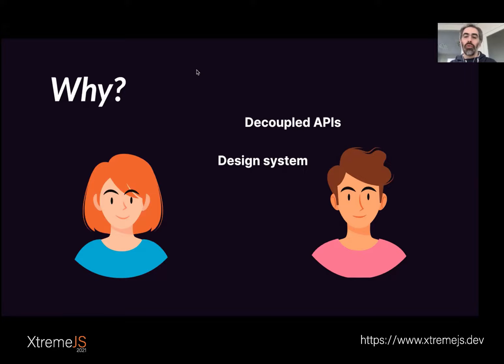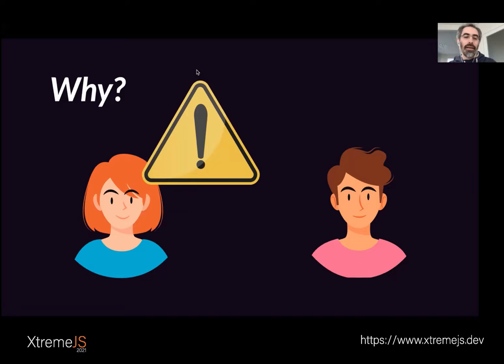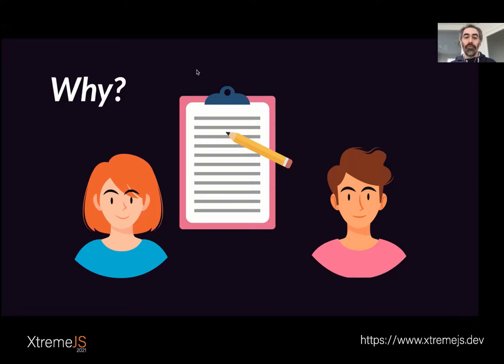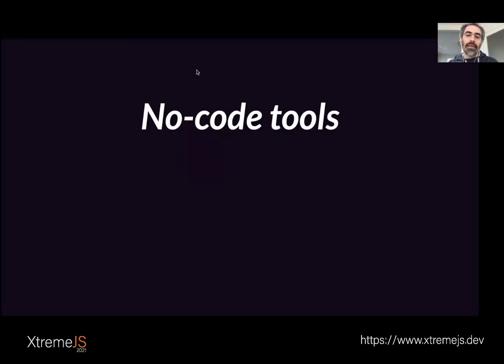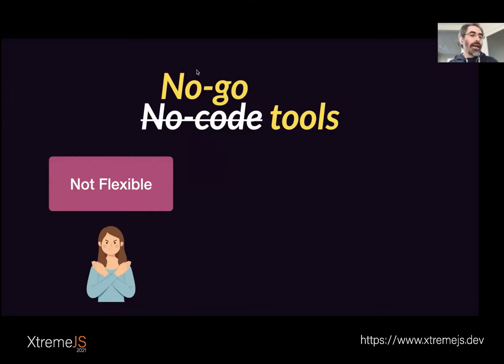John wants to use a modern stack for the front-end, something like Gatsby or Next.js with React. So John proposes to use a headless CMS, but that's a problem for Kate. Content creators don't like headless CMSs because instead of editing in a visual way, she is filling in gray forms, which is not very inspiring. So she asked John if they cannot use a no-code tool like Wix, but no-code tools for a corporate website are almost always no-go tools because they are not flexible.